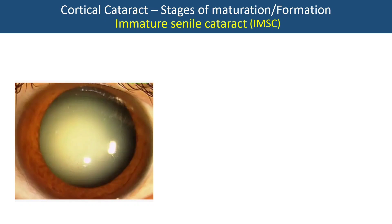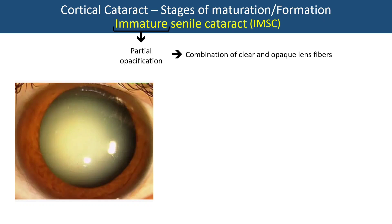Due to continuous overhydration, further change happens in the lens and there is a third stage called immature senile cataract, or IMSC. Here 'immature' means partial — there is partial opacification of lens fibers. Most of the fibers have become opaque and we have a combination of clear and opaque lens fibers. Due to this combination, the color is grayish white, and the stage also shows an iris shadow present. Vision may be reduced to finger counting.